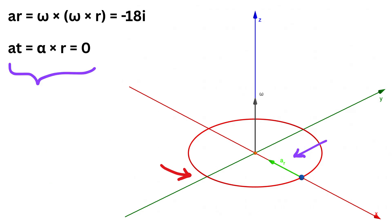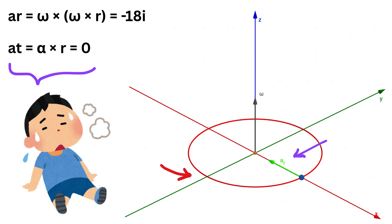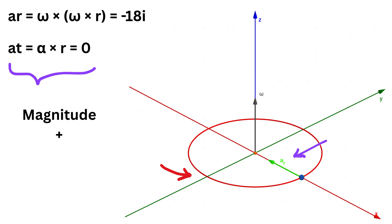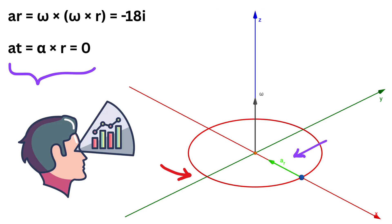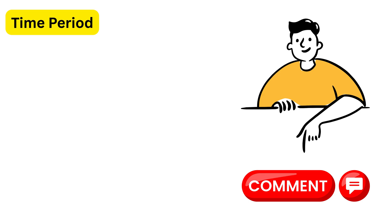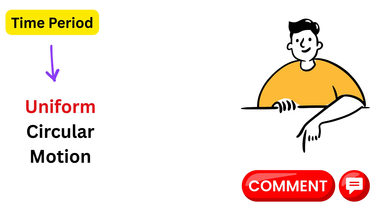Introducing vectors here might feel overwhelming at first, but once you get hold of it, it actually makes things much clearer — vectors give you both magnitude and direction, making the whole motion easier to visualize. The time period of circular motion is the total time taken to complete one full revolution. Let me know in the comments what the time period will be for uniform circular motion with angular speed omega.